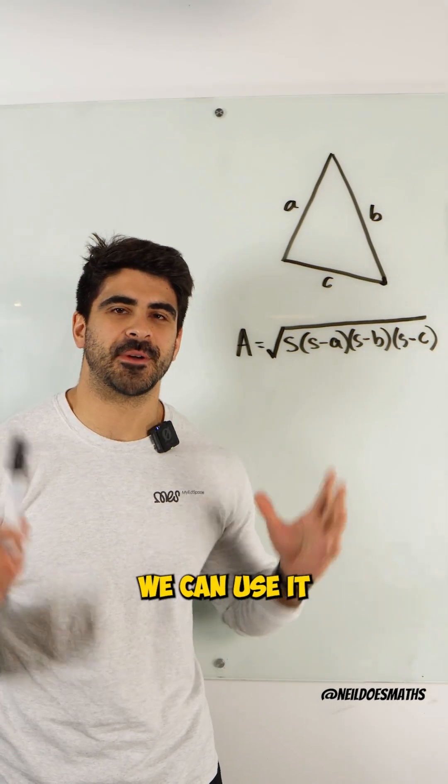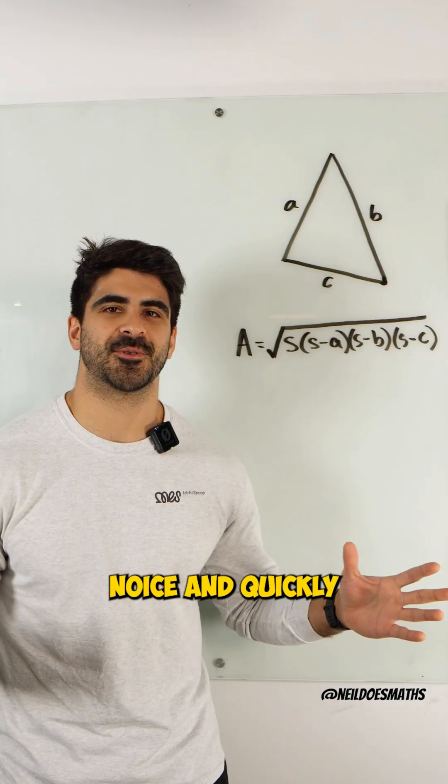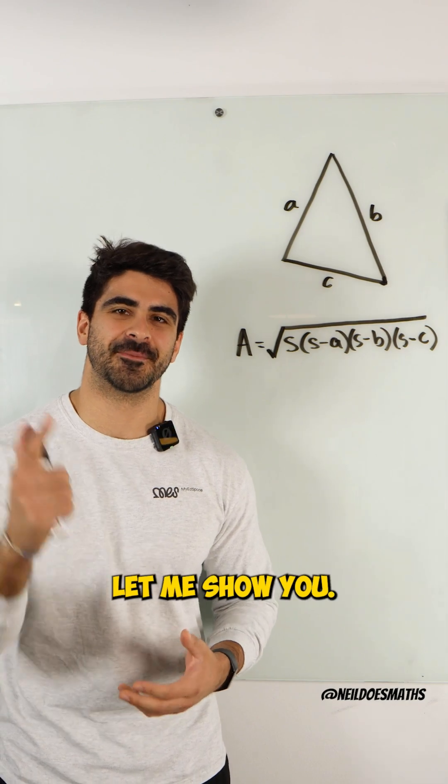Have you heard of Heron's formula and how we can use it to find the areas of triangles given three lengths? Nice and quickly. We do not need to use the cosine rule anymore. Let me show you.